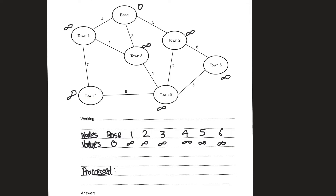First we look at the towns that are directly connected to the base — these would be town one, three, and two. Let's update these values since the node we start with is the base. The value for town one is four, town two is five, and town three is two. I'll update these in the diagram as well. Next we look at the town with the least value among these, and add base to the list of processed nodes.